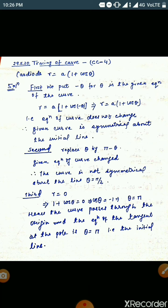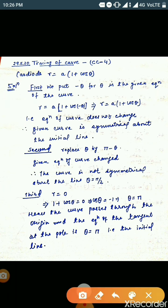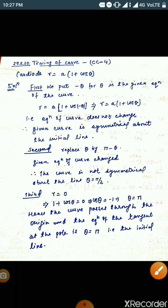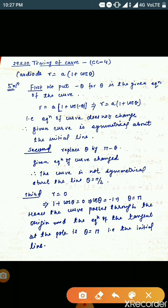We can solve this problem in five steps. In the first step, we put -θ for θ in the given equation of the curve. By putting -θ, we see there is no change in the given equation of the curve. Therefore, the given curve is symmetrical about the initial line.